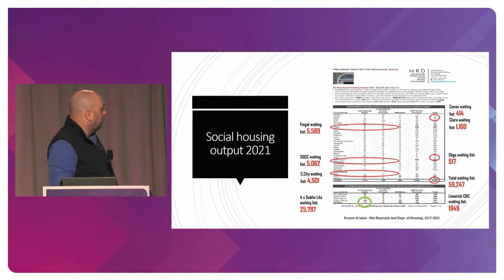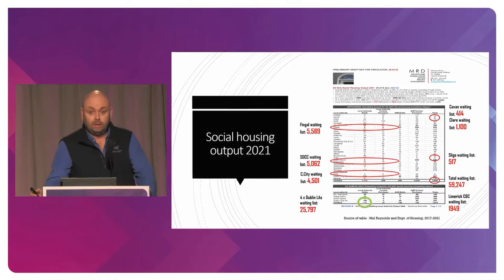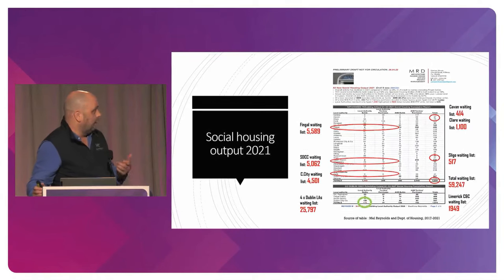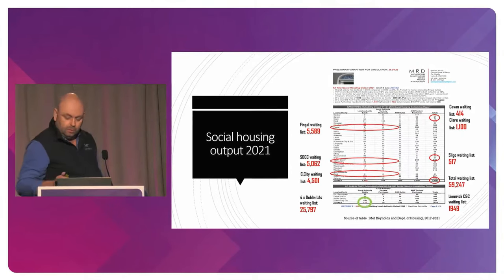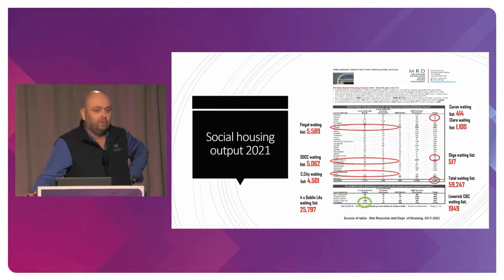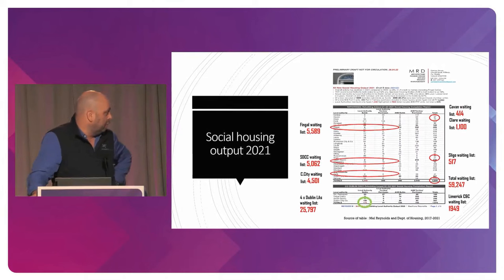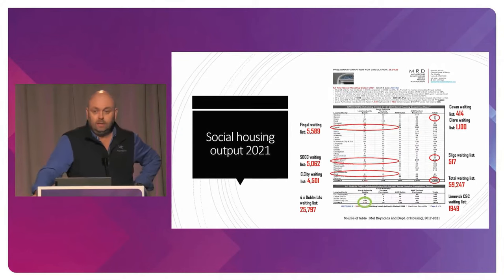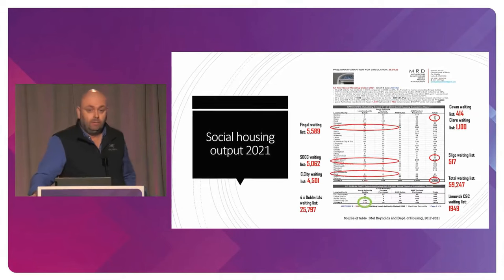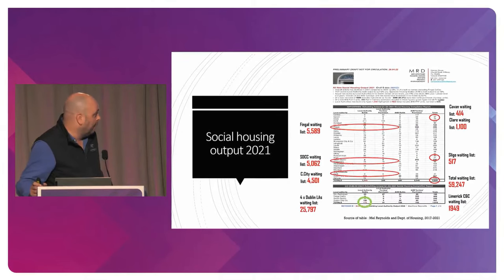Nobody did really well. It gets really interesting when you match it to the housing waiting list. Fingal, who directly built zero and bought zero — the AHB did the heavy lifting for them — they've got nearly 5,600 households on the social housing waiting list. The four Dublin local authorities built 175 houses between them last year, and their waiting list is nearly 26,000 households. If you add HAP, we've got about 60,000 people on the social housing waiting list nationally, and another 60,000 on HAP. We managed a total of about 4,500 social houses last year — so we're not really at the races.